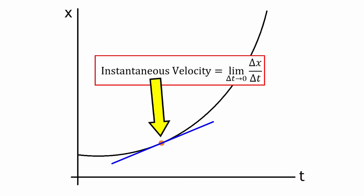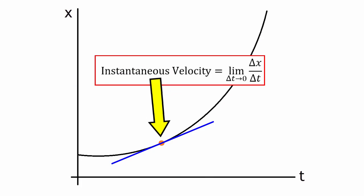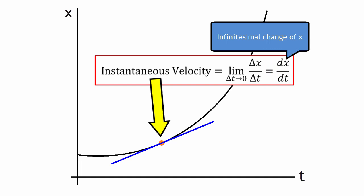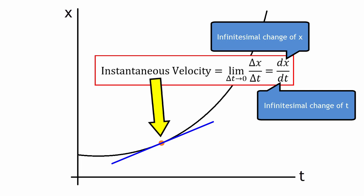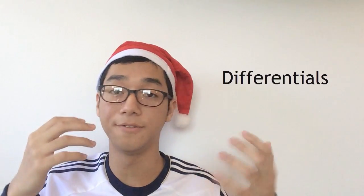This is the basics of differential calculus — it's just like finding the gradient of a graph at a certain point, but the two points you're finding the gradient of are really, really close together. When finding the instantaneous velocity, we write this as dx divided by dt: an infinitesimally small change in x divided by an infinitesimally small change in t. dx and dt are both what we call differentials, which are infinitesimally small lengths.